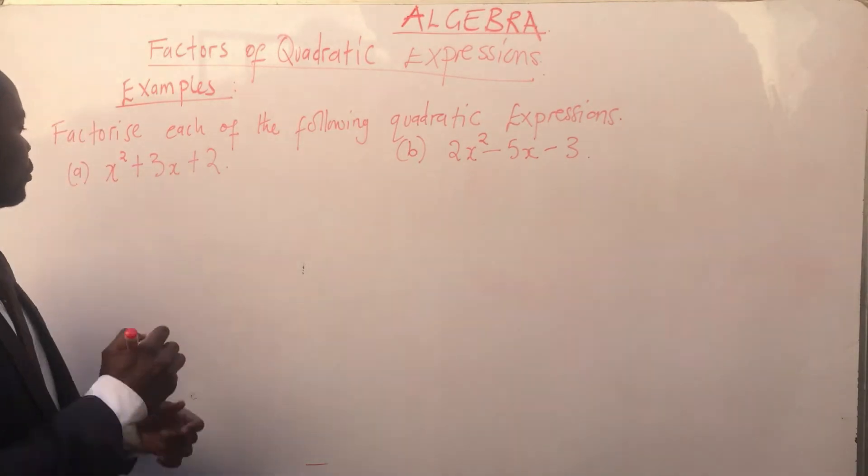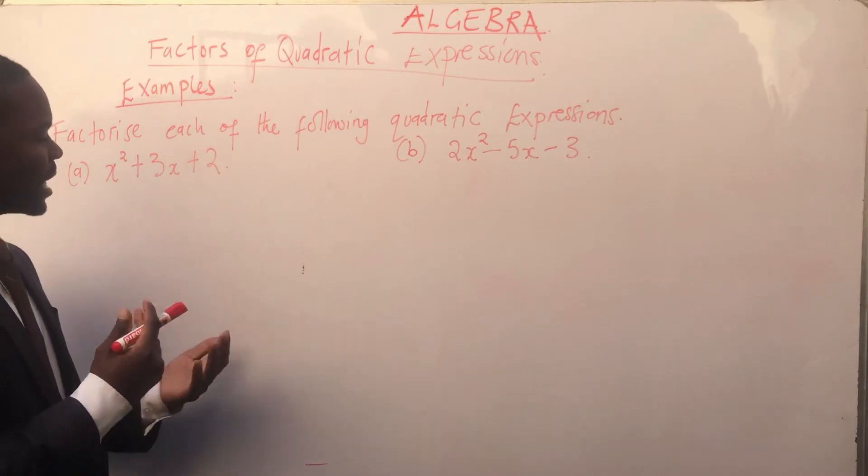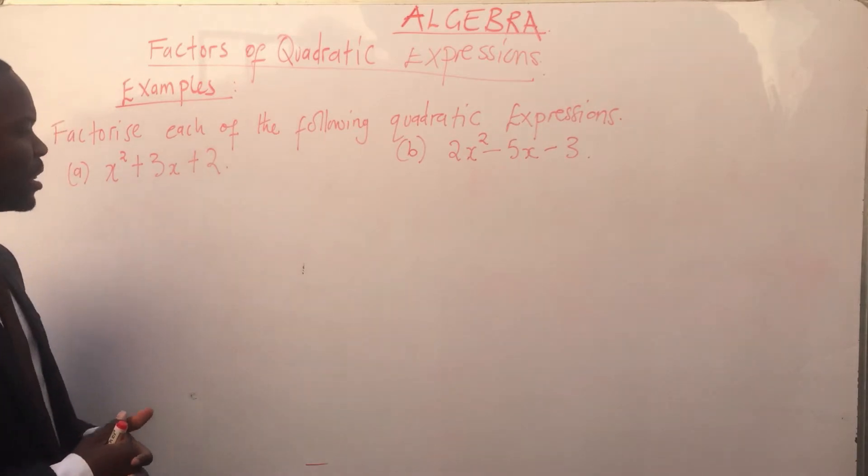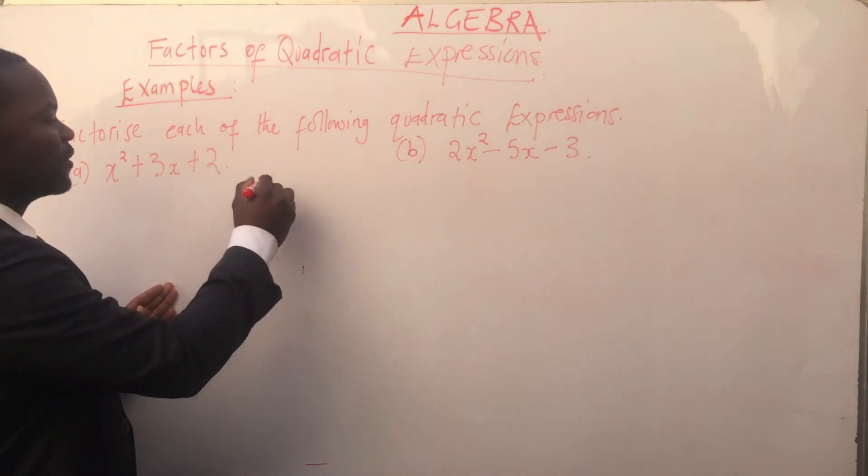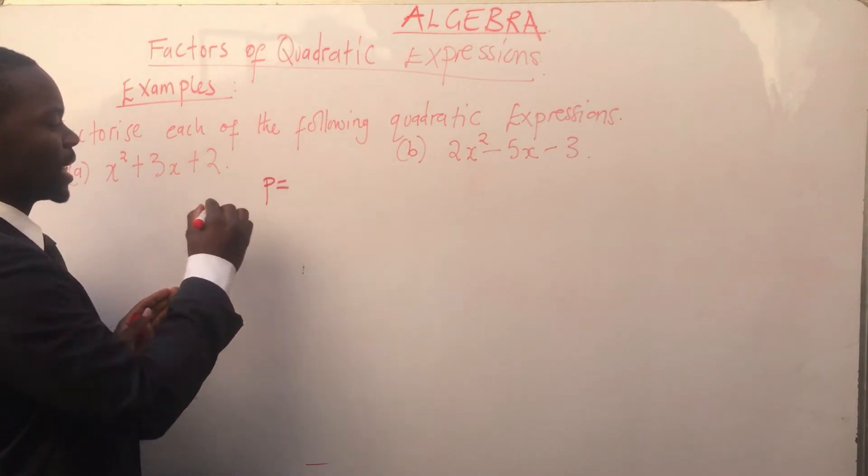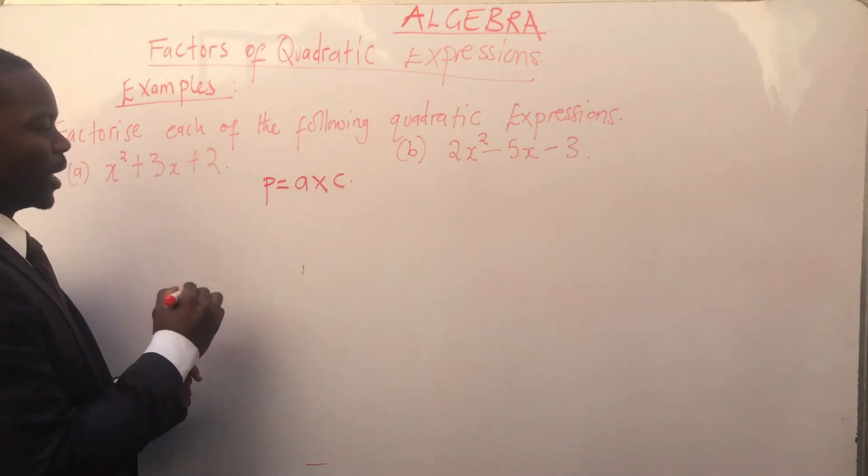We have got a, which is x² + 3x + 2. As discussed in the previous video, the first step to factorize any quadratic expression is to come up with your product. Your product is obtained by multiplying a times c.